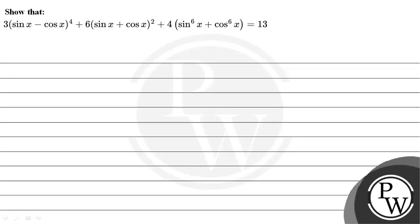Hello everyone. Let's read the given question. The question states that 3 into (sinx minus cosx) whole to the power 4, plus 6 into (sinx plus cosx) whole squared, plus 4 into (sin⁶x plus cos⁶x) is equal to 13.